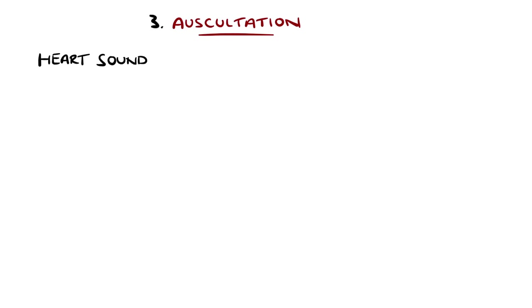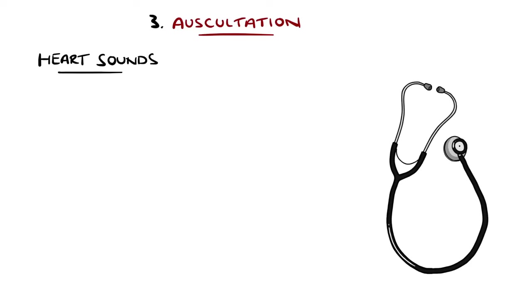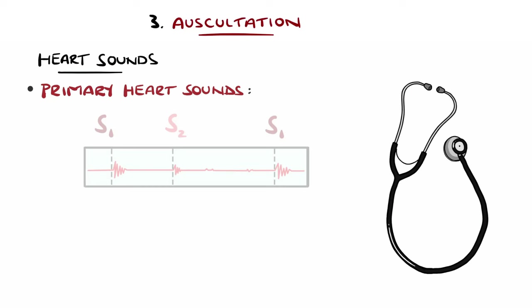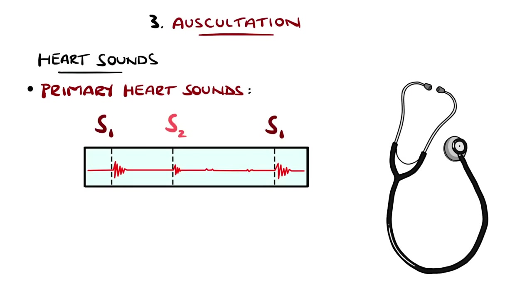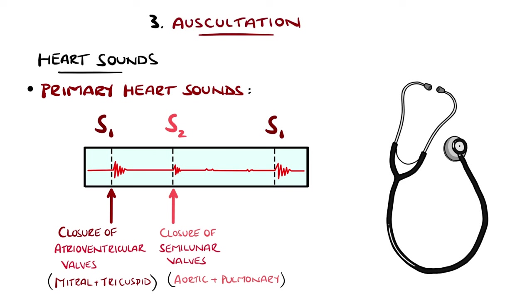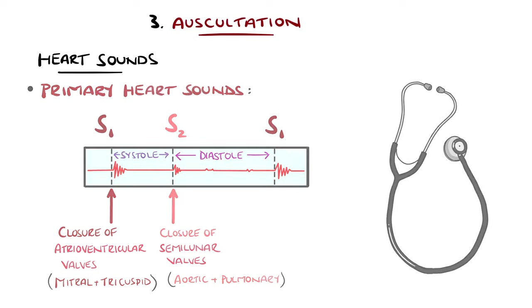Now we move on to auscultation. Normal heart sounds typically include S1 and S2, reflecting the closure of the atrioventricular valves and semilunar valves — that is the mitral and tricuspid, and the aortic and pulmonary valves respectively. This means between S1 and S2 is systole, with S1 marking the beginning and S2 marking the end of it. Sounds other than these are considered additional sounds, which may be pathological or non-pathological in nature.